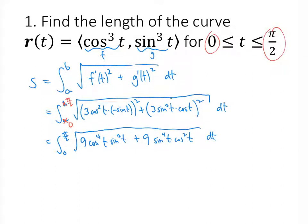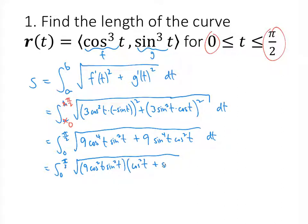We can factor that quite significantly — factor out a 9, and also factor out sine squared and cosine squared. That gives us 9 cosine²(t) sine²(t) times the quantity cosine²(t) plus sine²(t). Conveniently, cosine squared plus sine squared equals 1, so we get the square root of 9 cosine²(t) sine²(t), and taking the square root gives us 3 cos(t) sin(t).